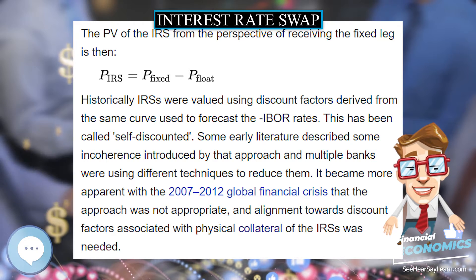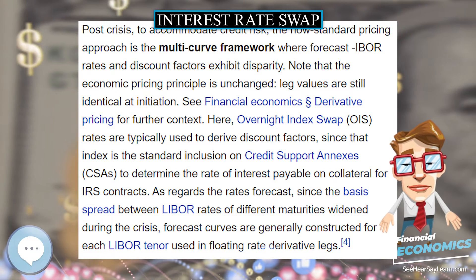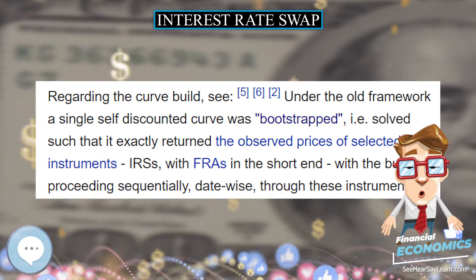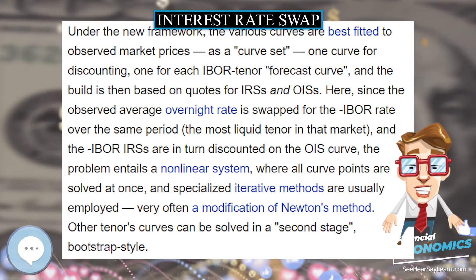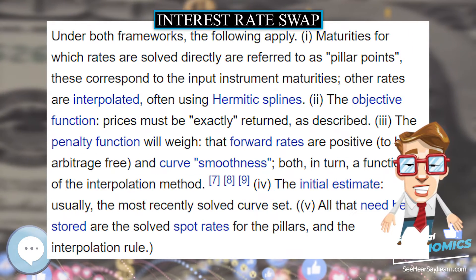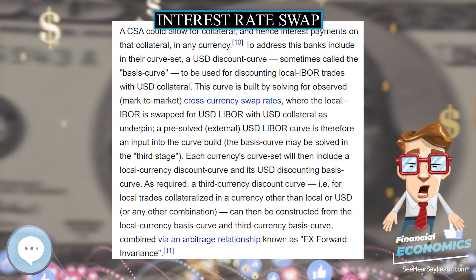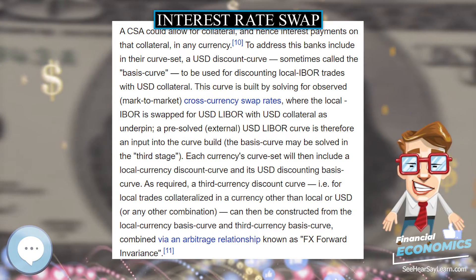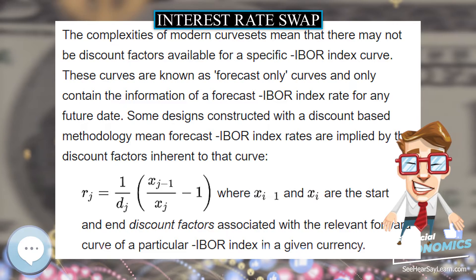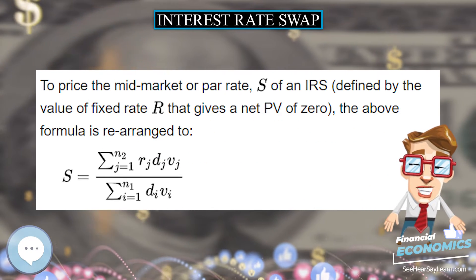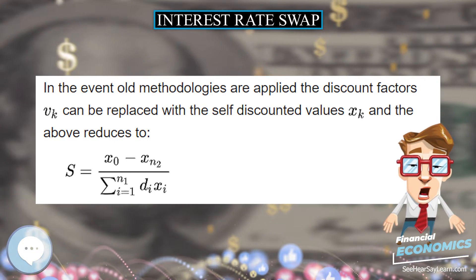As OTC instruments, interest rate swaps can be customized in a number of ways and can be structured to meet the specific needs of the counterparties. For example, payment dates could be irregular, the notional of the swap could be amortized over time, reset dates or fixing dates of the floating rate could be irregular, and mandatory break clauses may be inserted into the contract. A common form of customization is often present in new issue swaps where the fixed leg cash flows are designed to replicate those cash flows received as the coupons on a purchased bond. The interbank market, however, only has a few standardized types.